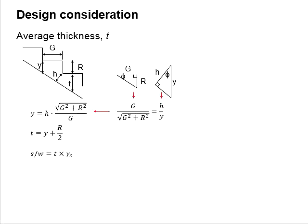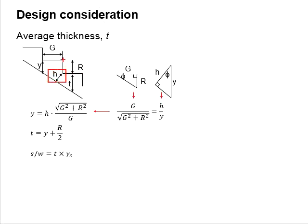For clearer explanations, let us look at this diagram here. We have the cross-section of the staircase, where we have goings, riser, and waist. This waist represents the thickness of the staircase, as measured from the corner tips between the goings and riser, perpendicular to the inclination of the staircase — that is, perpendicular to the inclined surface.